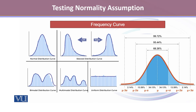The second method to test for the normality assumption is the frequency curve. If the frequency curve is symmetric, that is the hint that the distribution is likely to be normal. It is very important to note that all the normal distributions are symmetric, but not all symmetric distributions will be normal. So having a symmetric distribution does not guarantee that the distribution will finally be a normal probability distribution.